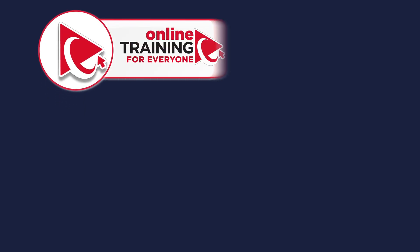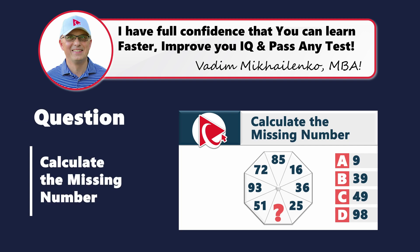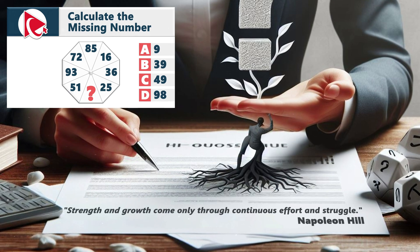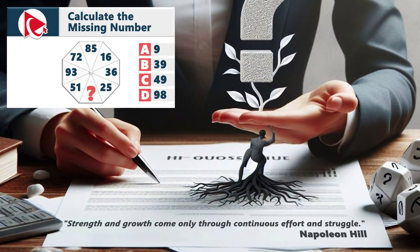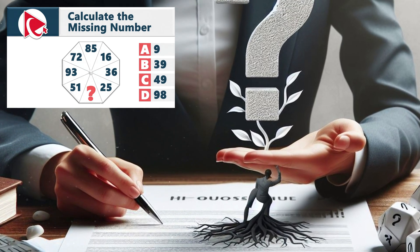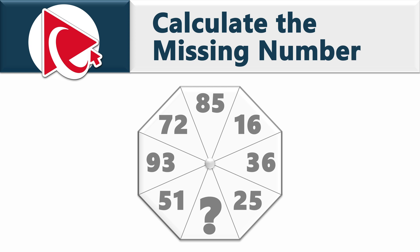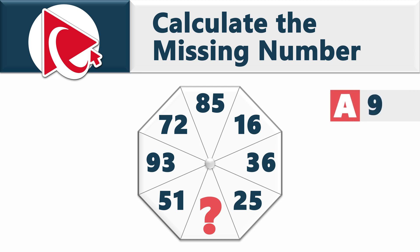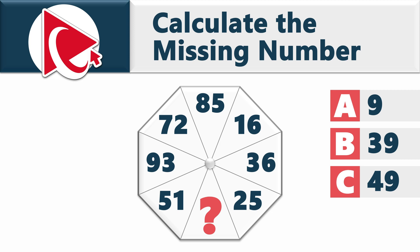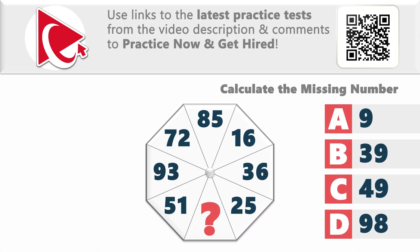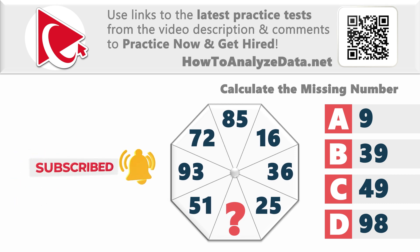To embrace this next question, recall the famous quote from Napoleon Hill: 'Strengths and growth come only through continuous effort and struggle.' You're presented with an octagon that has seven numbers inside and one missing number. Starting from the 8 o'clock position, the numbers are 51, 93, 72, 85, 16, 36, 25, and then the missing number. Select from choices: A — 9, B — 39, C — 49, and D — 98.